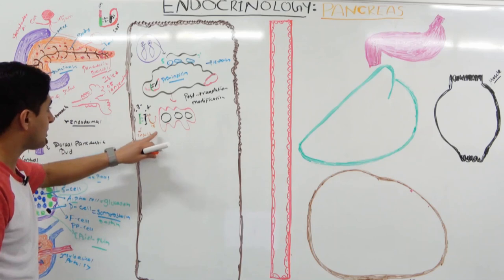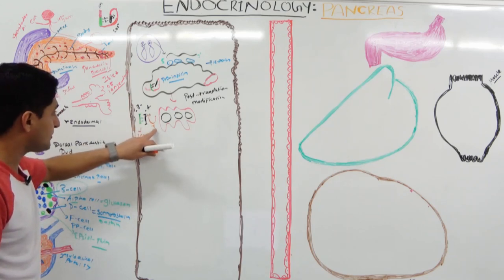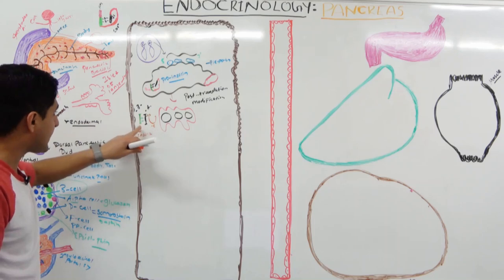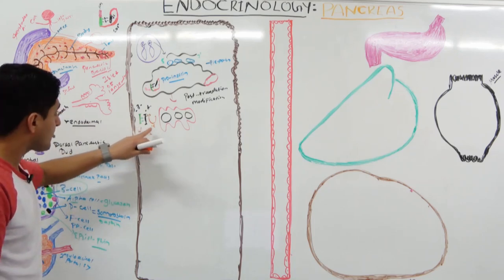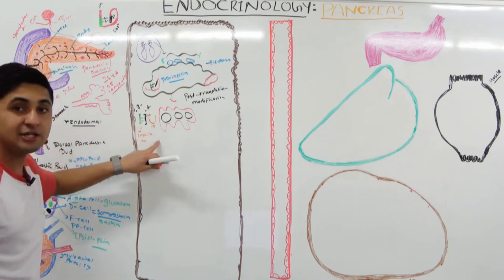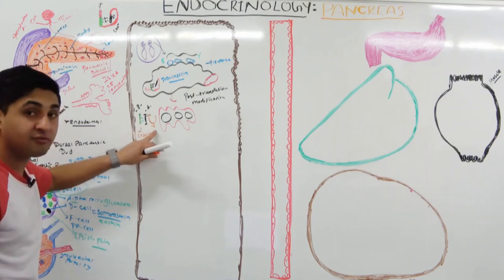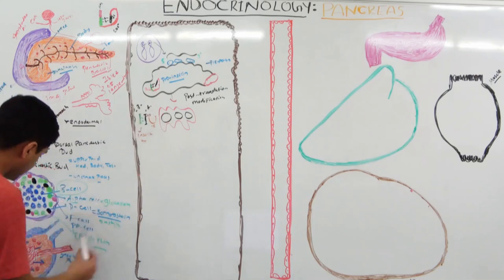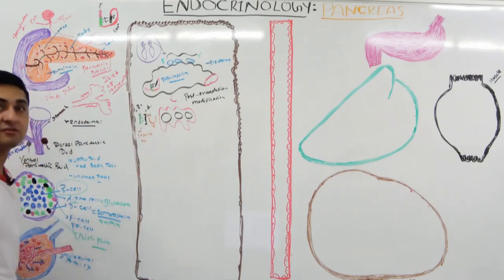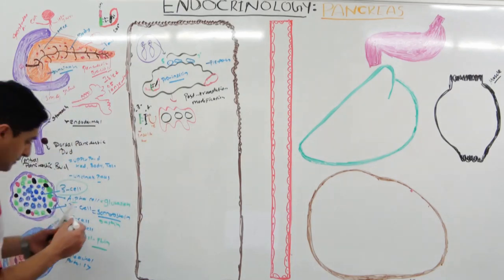C peptide is very important because C peptide and insulin are produced in equal amounts. That is why C peptide is often used as a marker of beta cell function — you should remember that.